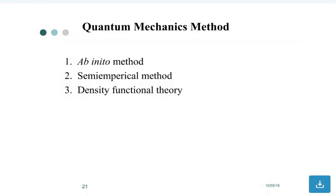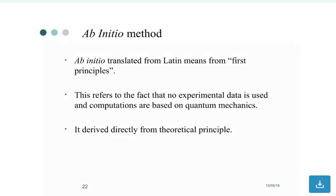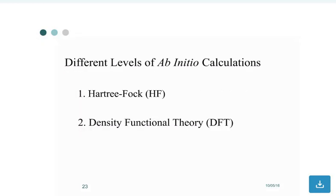Quantum mechanics methods: ab initio methods, semi-empirical methods, and density functional theory. Ab initio, translated from Latin, means from first principles. This refers to the fact that no experimental data is used in it and computations are based on quantum mechanics. It is derived directly from theoretical principles.